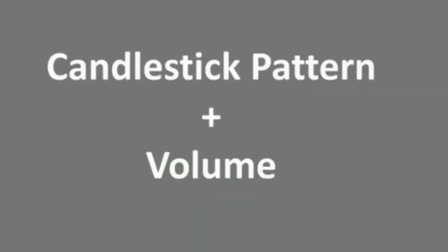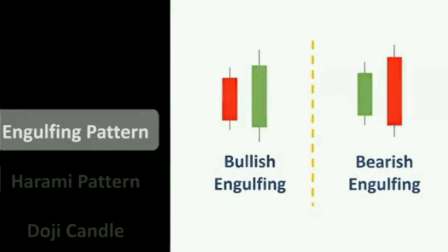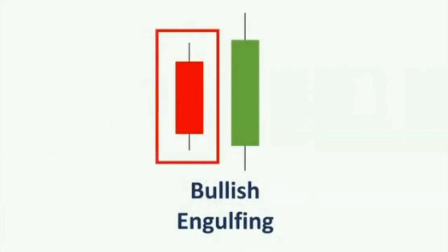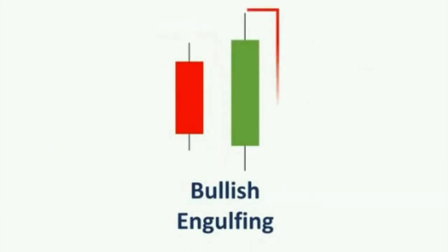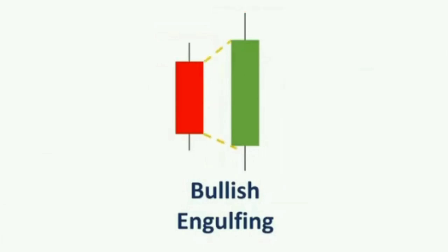Without wasting much time, let us understand the first candlestick pattern: the engulfing pattern. There are two types — the bullish engulfing and the bearish engulfing. In the bullish engulfing, the first candle is a red bearish candle indicating selling pressure and bearishness in the market. The next candle formed is a long green bullish candle that has crossed the open and close of the previous candle, telling us that the bulls have captured the market and the bears have lost control. This pattern is a bullish reversal pattern, and for it to be valid it should form along with proper volume.